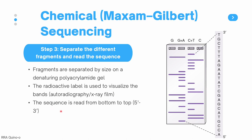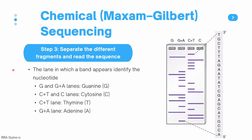The sequence is read from the bottom to the top, from the 5' end to the 3' end. At the bottom we find the shortest fragments, closer to the 5' end, and at the top there are much longer fragments. The lane in which a band appears identifies the nucleotide. If you have a band in the G and the G plus A lane, the nucleotide is guanine. If a band appears in both the C plus T lane and the C lane, the nucleotide is cytosine. If there is a band only in the C plus T lane, the nucleotide is thymine. And if there is a band only in the G plus A lane, the nucleotide is adenine.